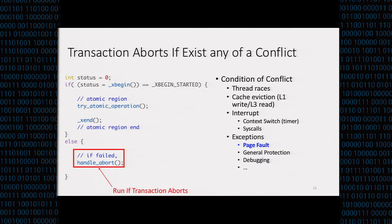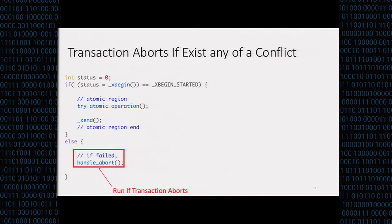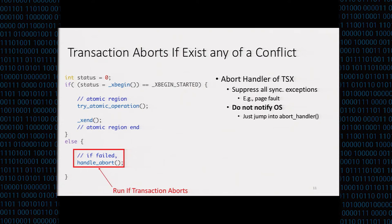The atomic region of TSX can fail due to data races, timer interrupts, context switches, or page faults. An important point is that on failure, rather than notifying the operating system's exception handler, Intel TSX directly calls the exception handler at user space — it does not fall back to the operating system to handle the exception. TSX suppresses all exceptions to the operating system and directly calls the user-space function, making the path much shorter and removing noise from the operating system.